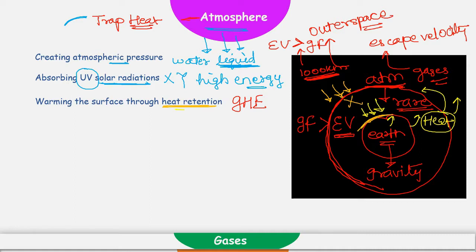If this heat retention quality is not present in atmosphere, heat will escape to outer space and Earth will become so cold that temperature will get reduced to somewhere around minus 18 degrees Celsius. This temperature is extremely cold for all life forms. So slowly all types of life forms will start disappearing from Earth's surface. That is why, by providing this warm ring around the Earth's surface, atmosphere is actually protecting all types of life forms.